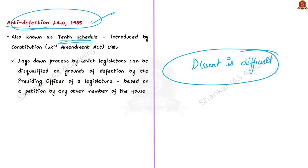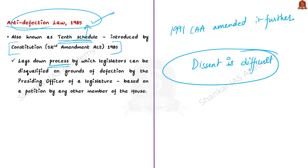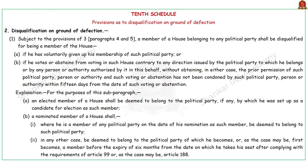The 10th Schedule to the Constitution is popularly known as the anti-defection law. It contains anti-defection provisions introduced through the Constitution 52nd Amendment Act of 1985 and later amended by the Constitution 91st Amendment Act of 2003. The 52nd Amendment Act provides for the disqualification of members of Parliament and state legislatures on the ground of defection from one political party to another. The 10th Schedule lays down the conditions regarding disqualification on the ground of defection, and the process by which legislators can be disqualified is decided by the presiding officer of a legislature based on a petition by another member of the house.